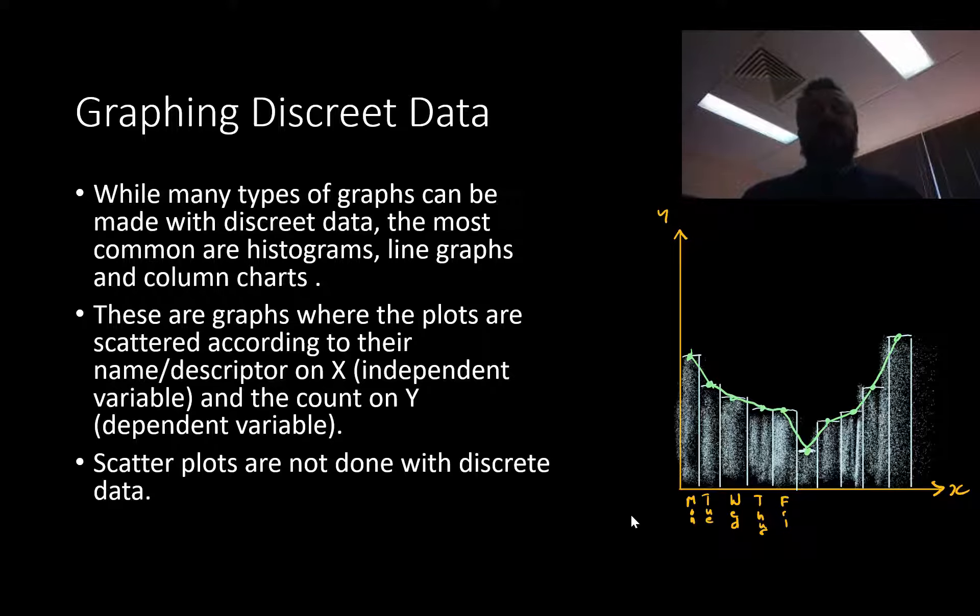So if we want to graph discrete data, there are many, many types of graphs we can use. Usually, we'll use like a column chart or histogram. Now remember, a line graph is where we put the dots and we join the dots up. We don't do a line in best fit. So in these graphs, the name of what we're counting, or the independent variable, goes along the x-axis, and the count goes along the y-axis. Scatter plots, which are probably the most common graph we do in sciences, in high school at least, are not done with discrete data.